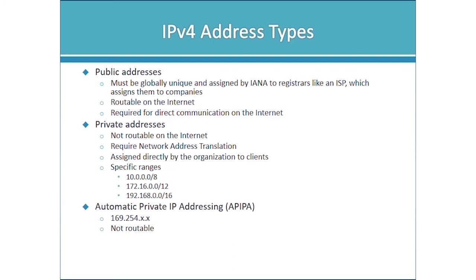A Network Address Translation device has two interfaces: one with a public address and one with a private address. It serves as the gateway for all LAN devices. When a device needs internet access, it sends packets to the NAT device — which can be a server, router, or firewall — which then uses its own public address to retrieve internet content on behalf of the client. The private address is never used as the source address externally.